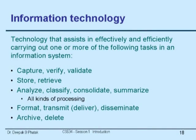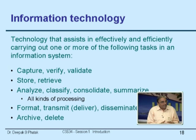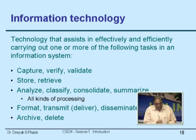It is in this context that we wonder what is information technology. Information technology is any technology that assists in effectively and efficiently carrying out one or more of the following tasks in an information system: capturing information, verifying, validating, storing, retrieving, analyzing, classifying, any kind of processing, formatting, transmitting, disseminating, archiving. Any technology which permits us to do any one or more of these actions is information technology. If I pick up a phone and dial your number and convey information on which you act, I am using information technology. A pencil and paper also represent information technology.